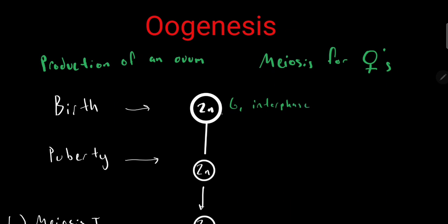Now as females hit puberty, one time each month, one unfinished egg will undergo meiosis I. These are still diploids and they are in prophase I.